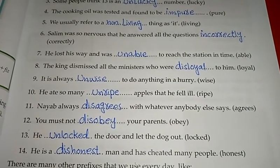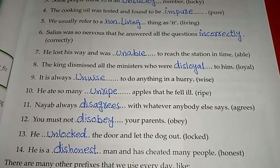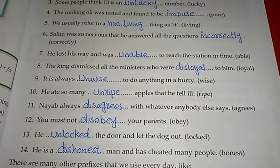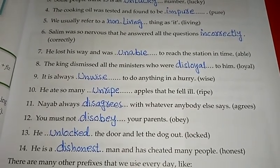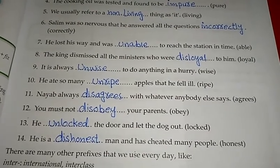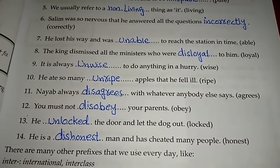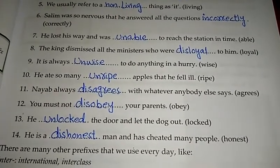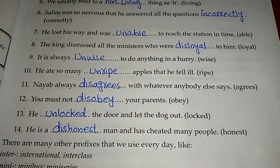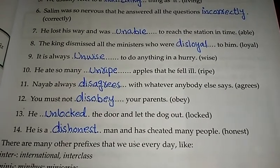Tenth: 'He ate so many blank apples that he fell ill' — 'ripe' becomes 'unripe'. Eleventh: 'Nayaab always blank with whatever anybody else says' — 'agrees' becomes 'disagrees'. Twelfth: 'You must not blank your parents' — 'obey' becomes 'disobey'. Thirteenth: 'He blank the door and let the dog out' — 'locked' becomes 'unlocked'. Fourteenth: 'He is a blank man and has cheated many people' — 'honest' becomes 'dishonest'.